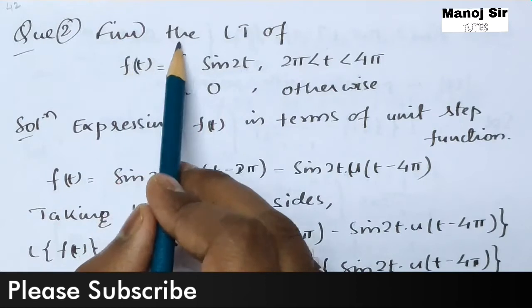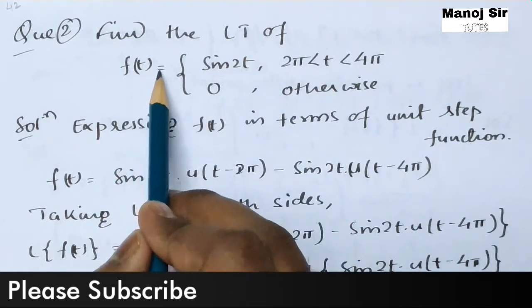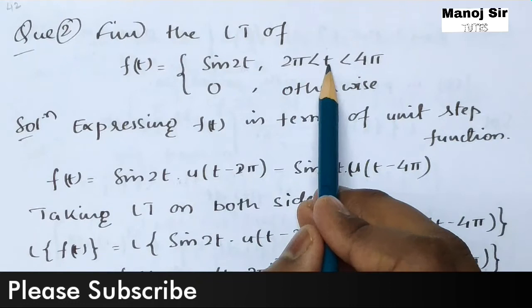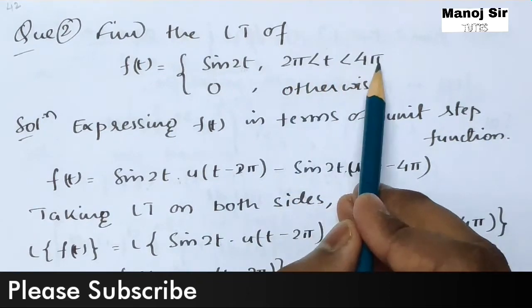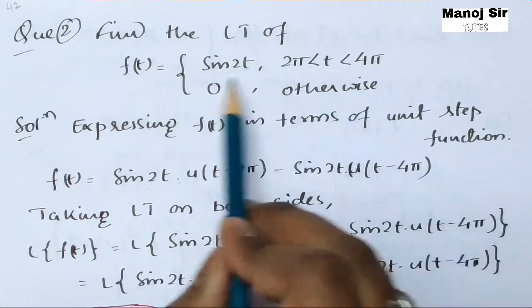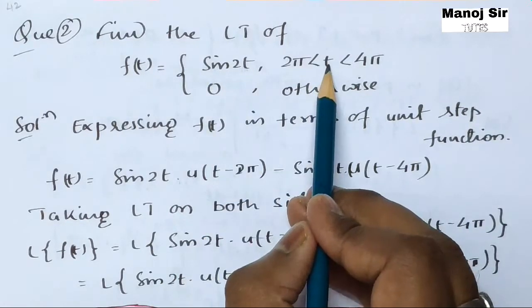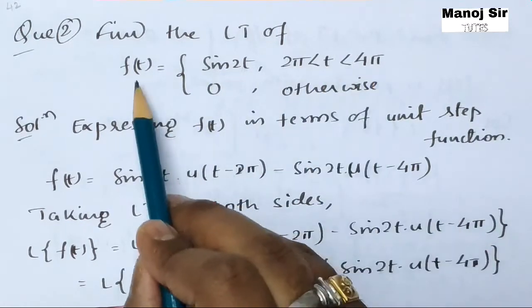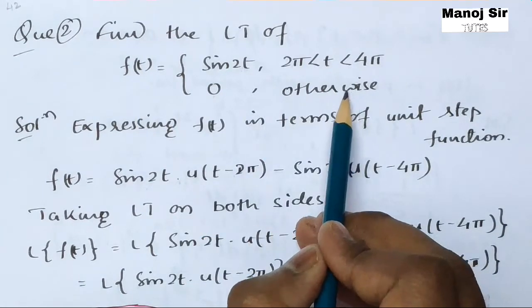The question is: Question number two — find the Laplace transform of f(t) equals sine(2t), where t ranges from 2π to 4π, and f(t) equals 0 otherwise.